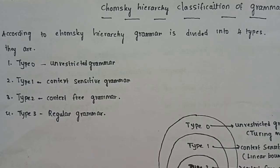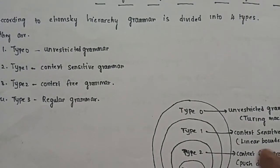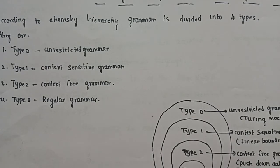Grammar contains a set of rules to form a particular language. In automata theory, there are different types of machines: Turing Machine, Finite State Machine, Linear Bounded Automata, and Pushdown Automata.